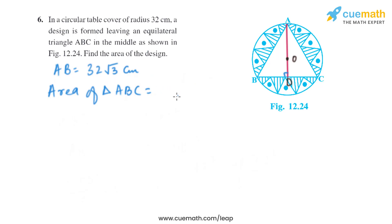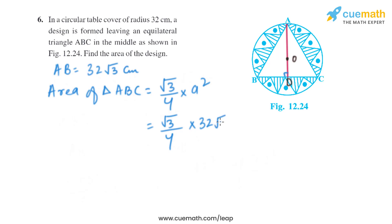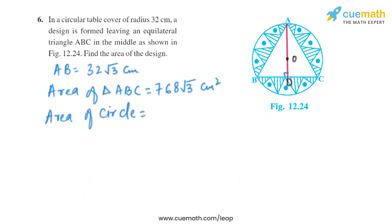Now let's find the area of the equilateral triangle, which is (√3/4) × a². With a = 32√3, this becomes (√3/4) × 32√3 × 32√3. Solving this, the area of triangle ABC is 768√3 square centimeters.